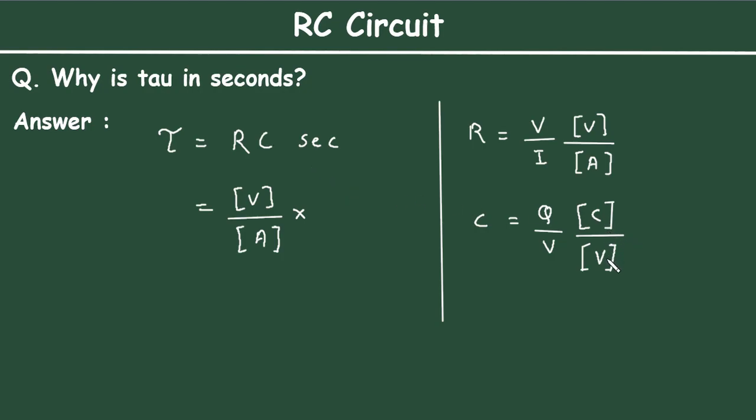We replace capacitance by Coulomb per volt, so it becomes [C/V]. Now the voltage terms cancel.